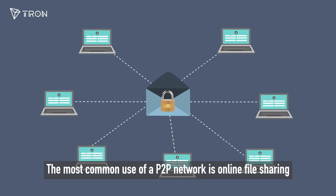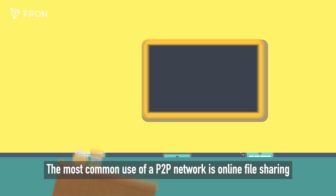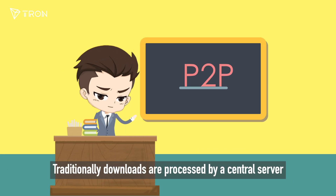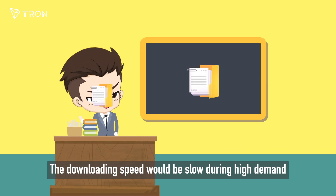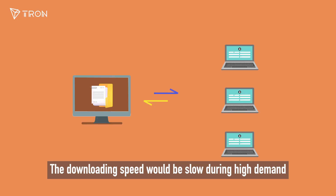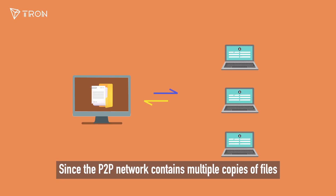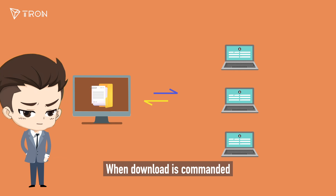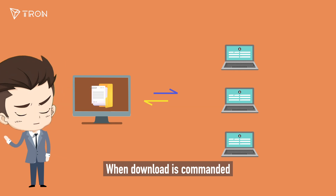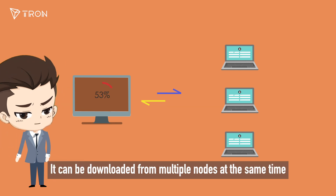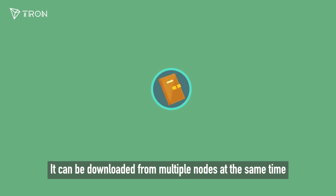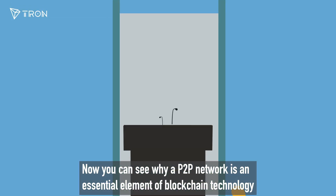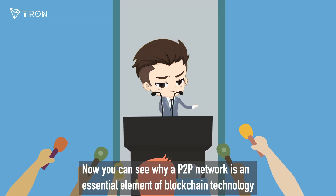The most common use of a P2P network is online file sharing. Traditionally, downloads are processed by a central server, so downloading speed would be slow during high demand. Since the P2P network contains multiple copies of files, when a download is commanded it can be downloaded from multiple nodes at the same time — which is why P2P is an essential element of blockchain technology.